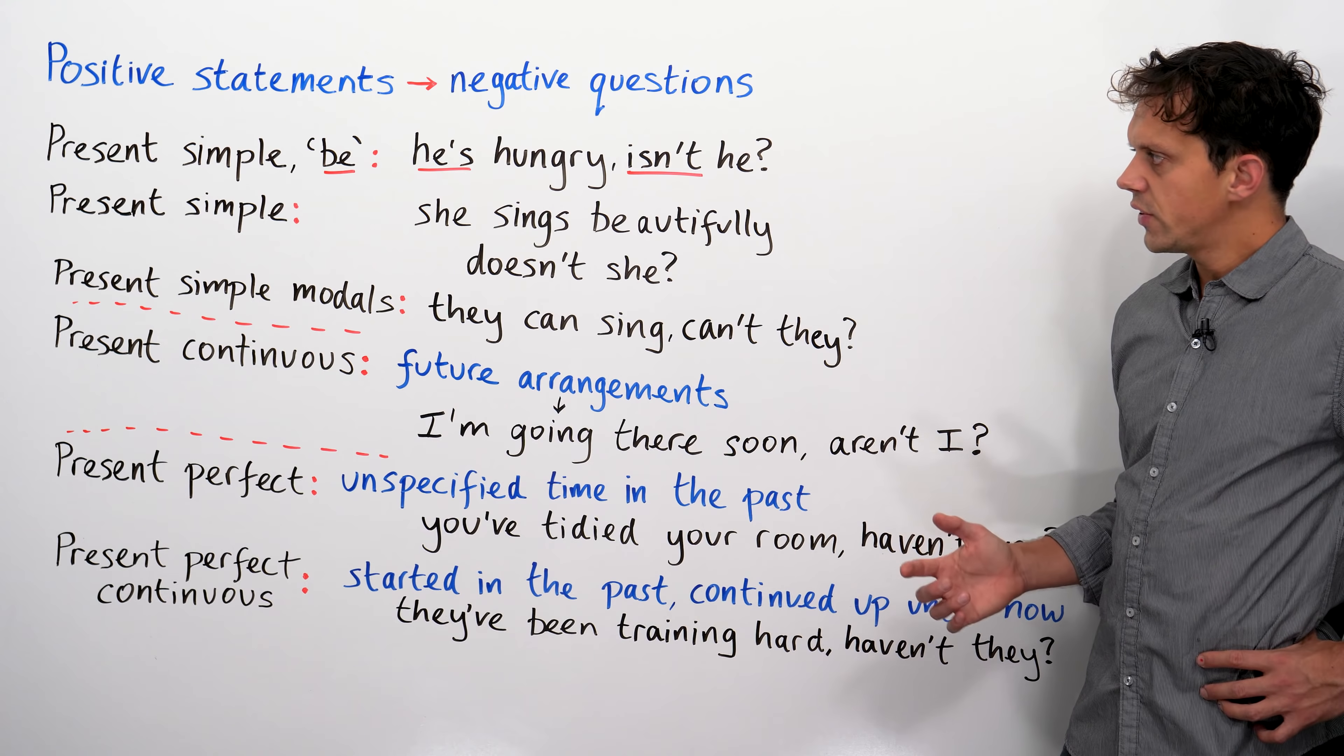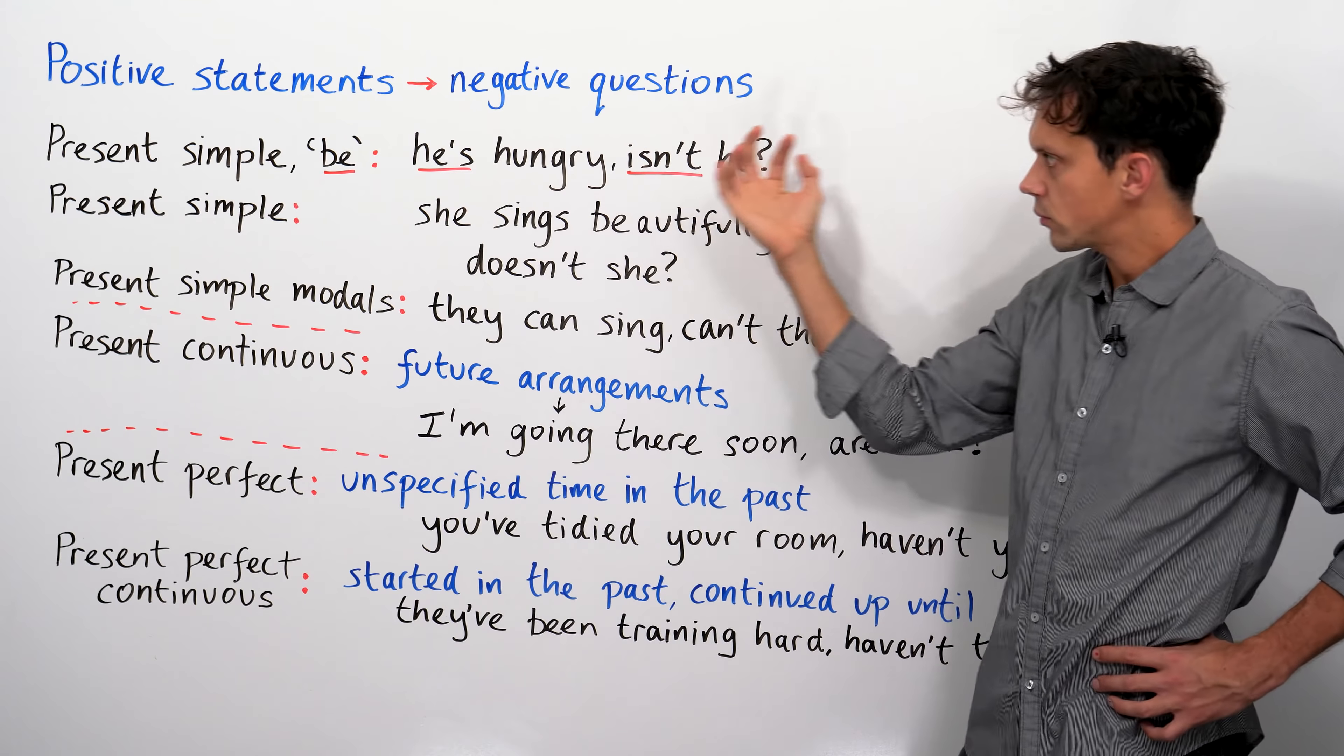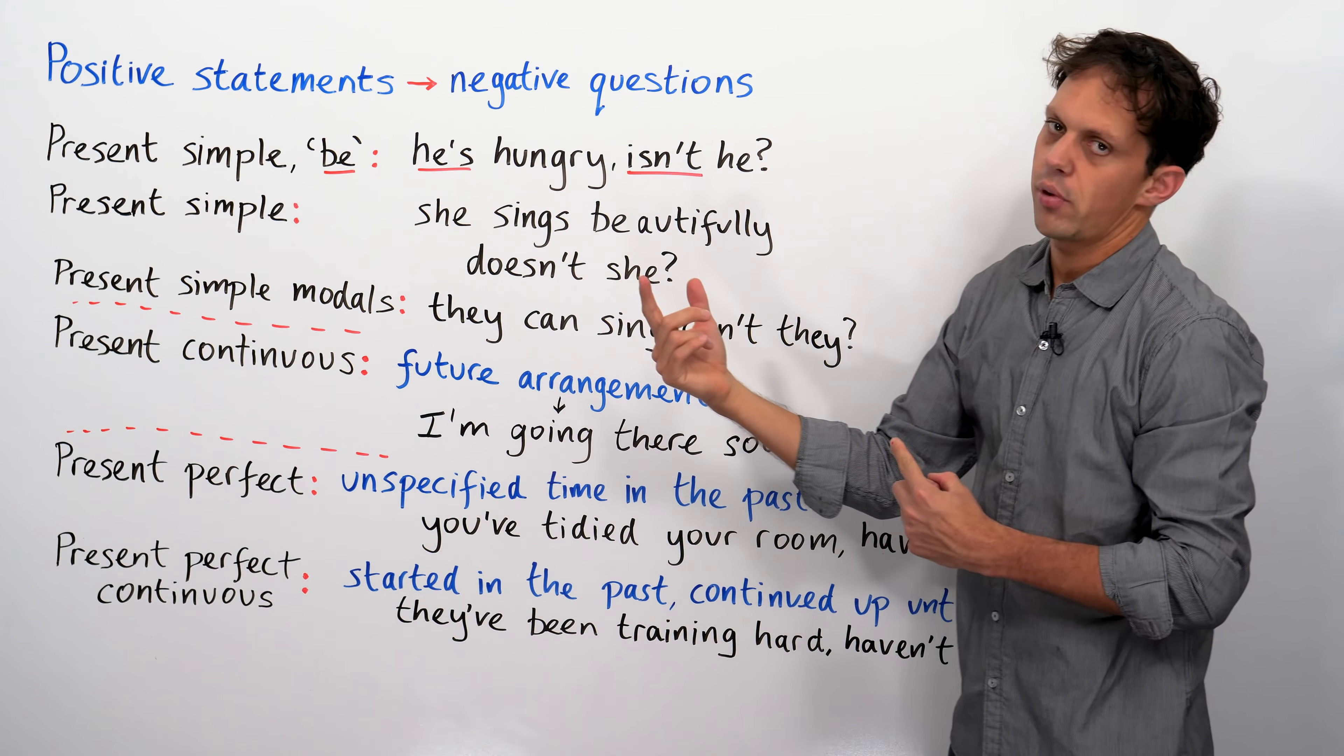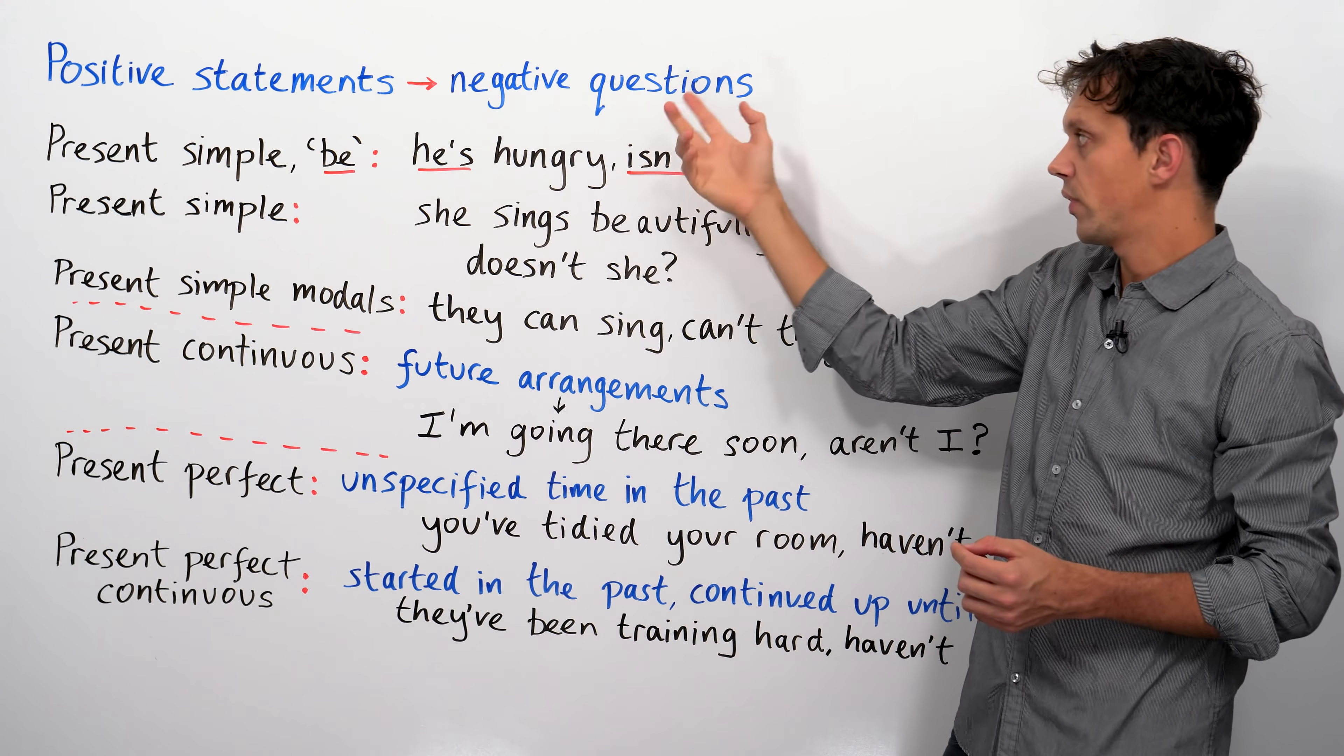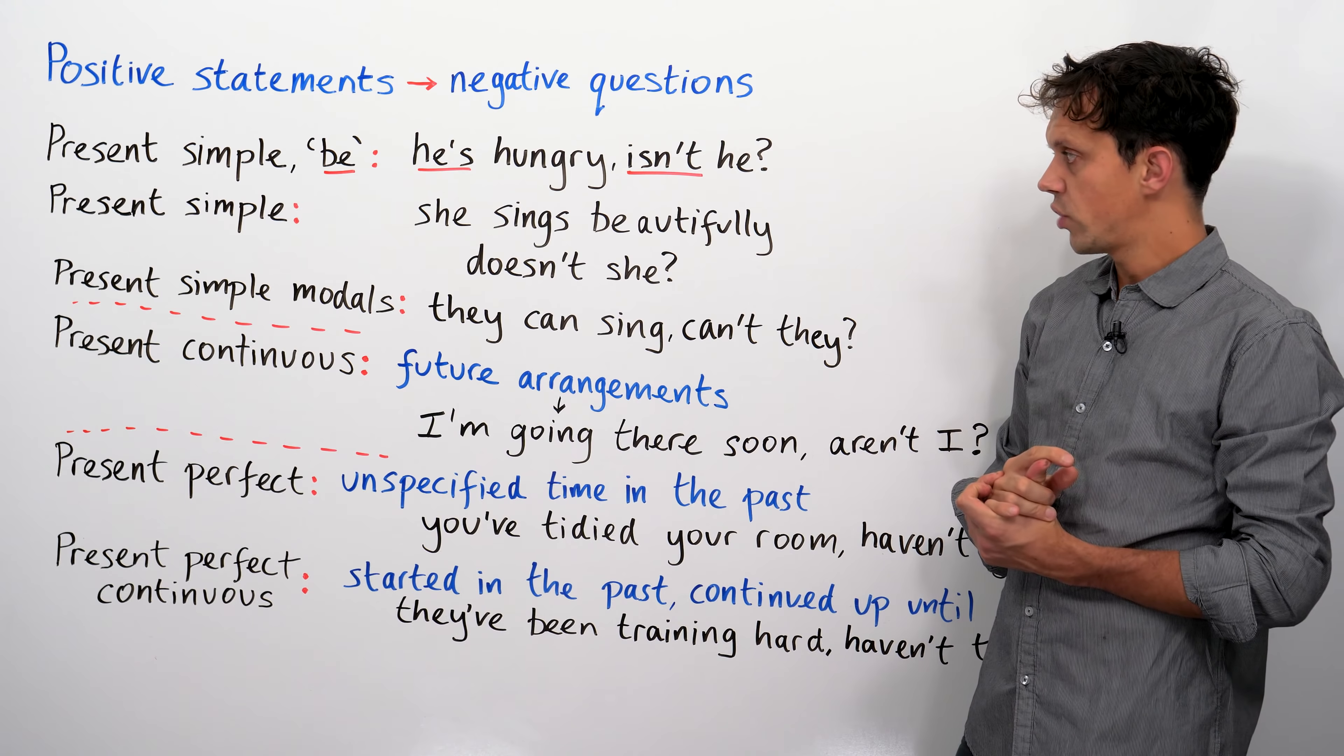So, as I said, these are all positive statements with negative questions. Now, I can reverse that round and have negative statements with the questions phrased in the positive. Let me demonstrate.